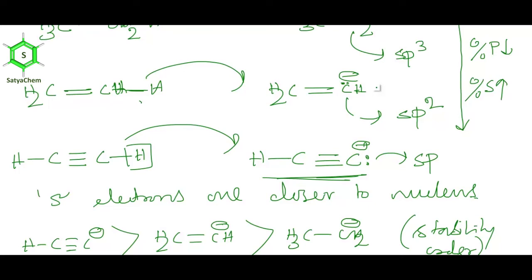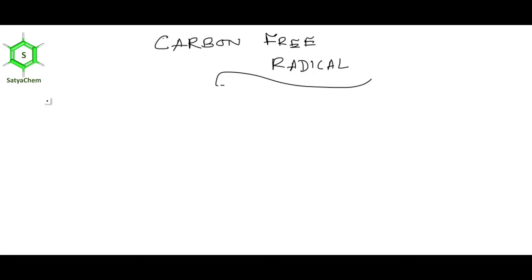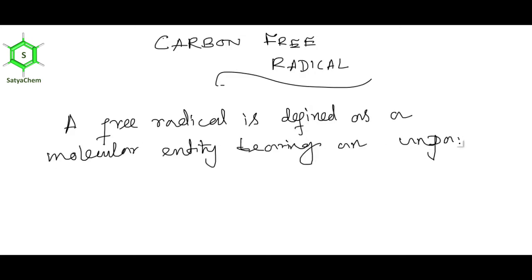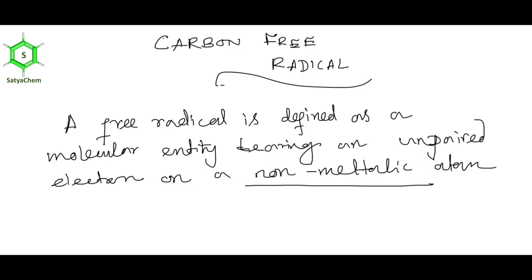Now I am going to discuss carbon free radicals. A free radical is defined as a molecular entity bearing an unpaired electron on a non-metallic atom. This is the important definition of a free radical. These are very short-lived and highly reactive intermediates, involved in many synthetic and industrial processes. The simplest carbon free radical is CH3 dot (methyl radical).